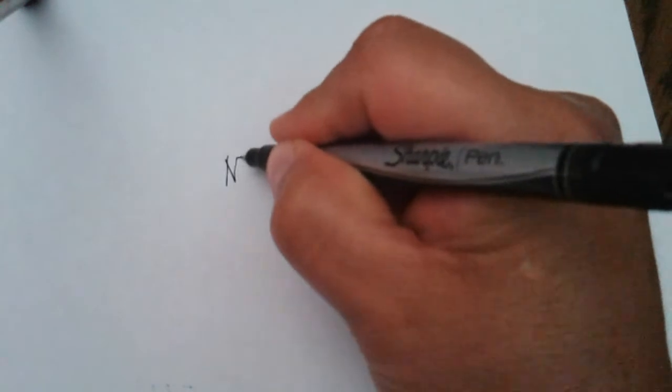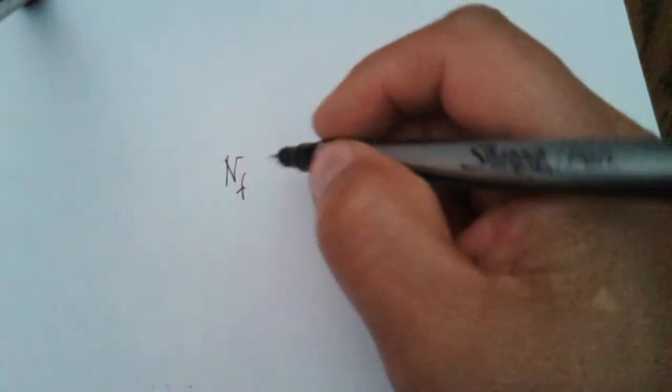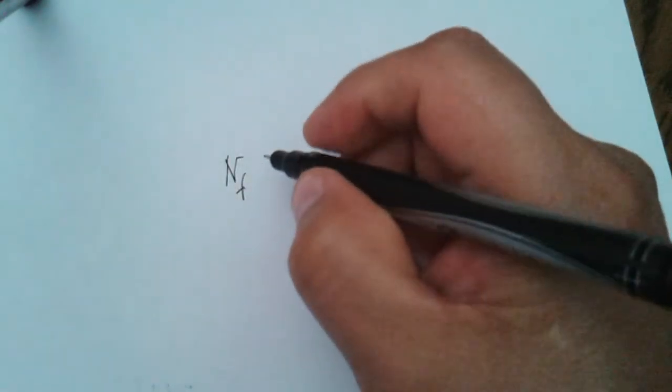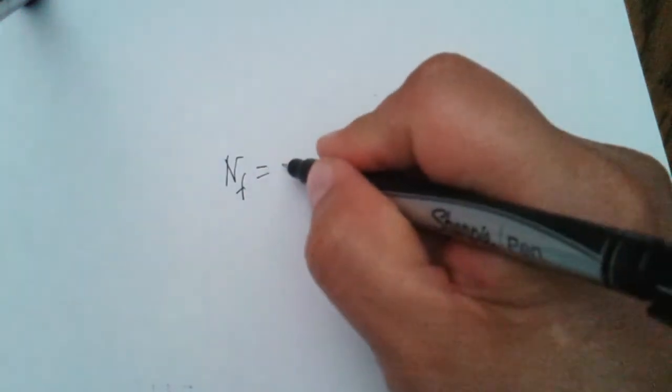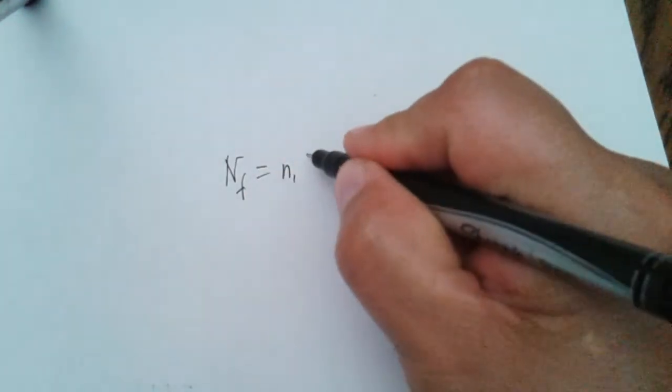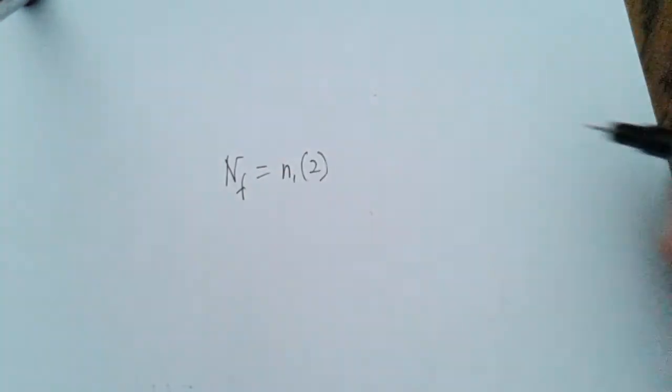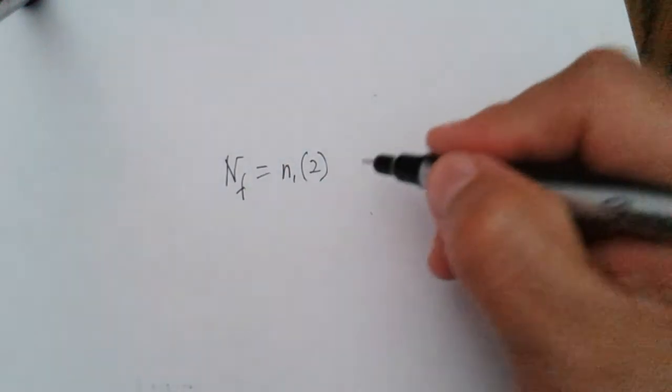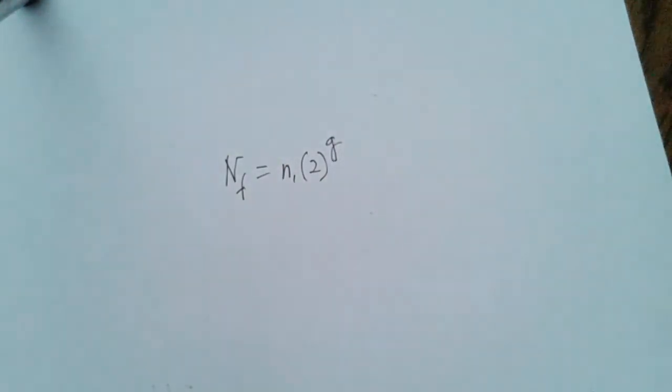The population equation is nf is equal to the final population is equal to ni, which is the initial population, times 2. That's a constant for binary fission, times the number of generations.